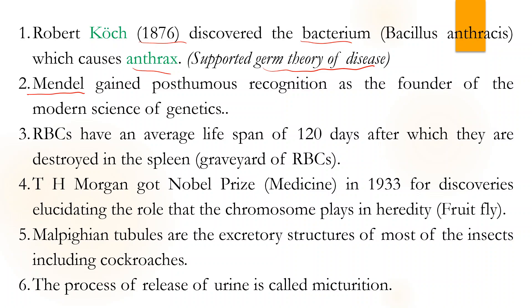Gregor Mendel is called the founder of the modern science of genetics. He was a mathematician and also a religious figure in the church. The average lifespan of RBCs is 120 days, after which they are destroyed in the spleen — that is why we call the spleen the graveyard of RBCs.